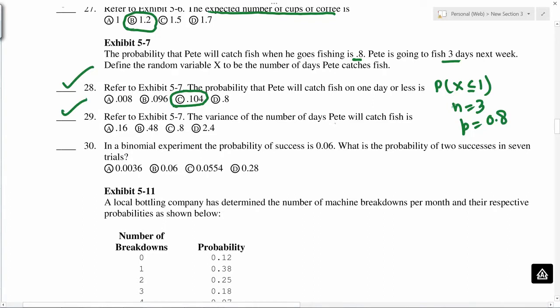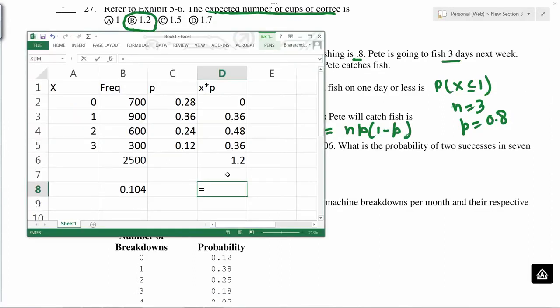Variance of number of days Pete will catch fish. So variance for a binomial distribution, or s squared here, is given as n times p times 1 minus p. 3 times 0.8 times 1 minus p. So 0.48.